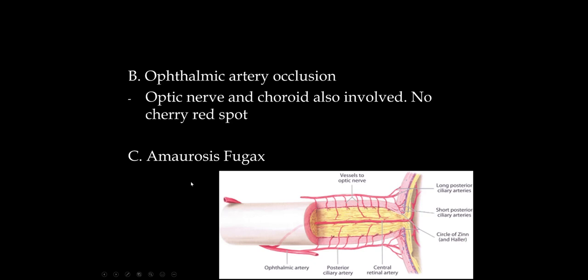Amaurosis fugax is a transient ischemic attack, almost always from retinal emboli from the internal carotid artery. This can involve ischemia to the retina, the optic nerve, or both. Classically, patients have a loss of vision in one eye like a mist that clears up after a few minutes. If you hear that story — painless visual loss that clears like a mist returning to normal — it's very important to get a carotid ultrasound because most likely it's emboli from the carotid.